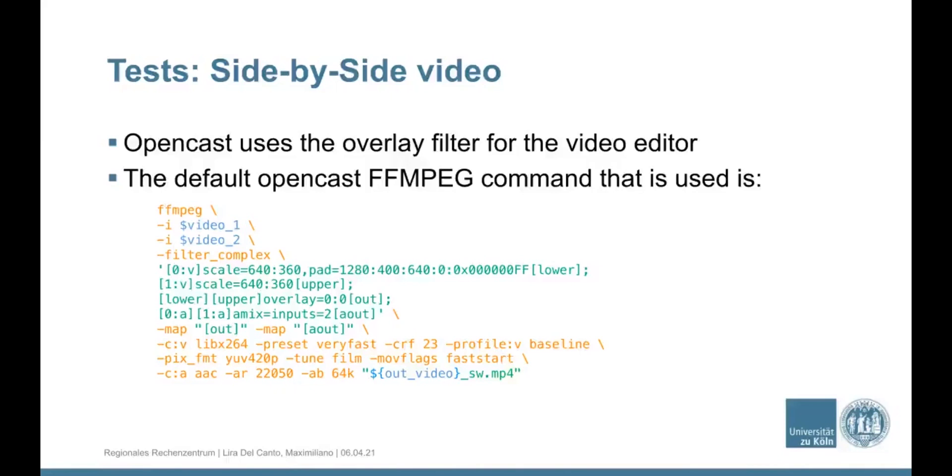So to do this in ffmpeg, there are two ways that you can do this. First, one way, for example, with the side-by-side video is to use the new filter, the overlay filter, or the traditional way. And I will show both so we can see the differences. This is the traditional way. And this is the way that Opencast uses to recreate the previews, the preview for the video editor.